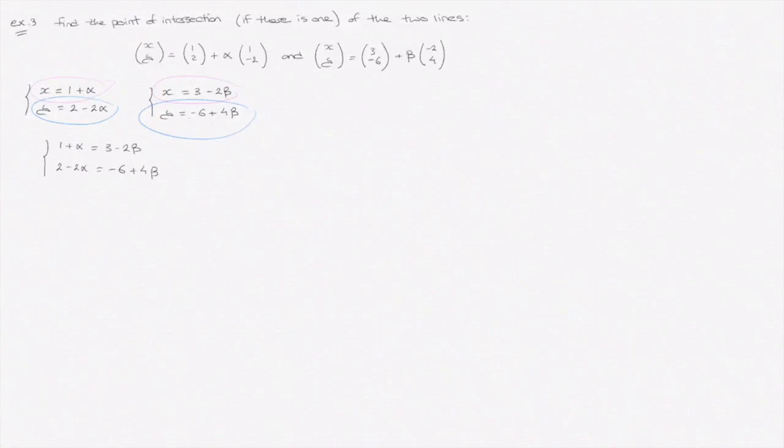We now have two simultaneous equations. We rearrange these so that the unknowns alpha and beta are all on the same side of the equations. So that would be alpha plus 2 beta equals 2, as well as 2 alpha plus 4 beta equals 8.